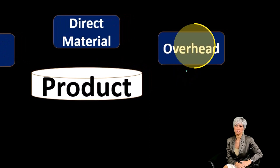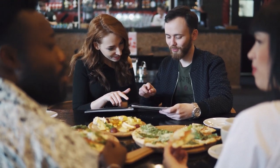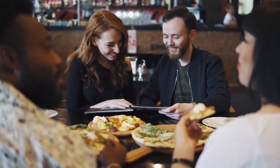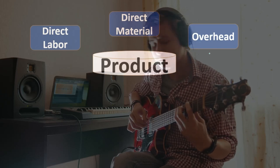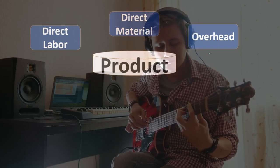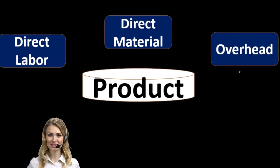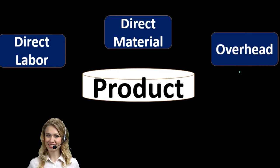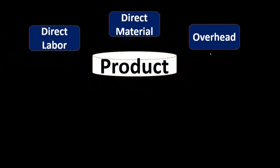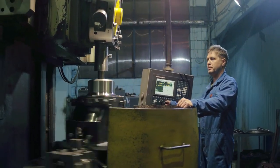Then we have this bucket of overhead — the most confusing bucket, the one we're going to have to do something with. These are costs that we cannot apply directly to a specific unit or a specific area. For example, if we're making custom guitars, things like glue are so small that we don't want to apply them directly — it would take too much time to track the amount of glue used. So we put it into overhead and find some type of cost allocation. Anything within the factory that we cannot apply directly — pretty much anything other than direct materials or direct labor — goes into overhead.